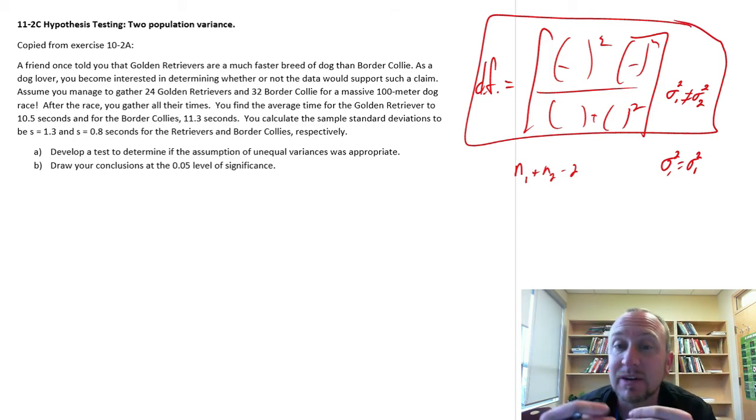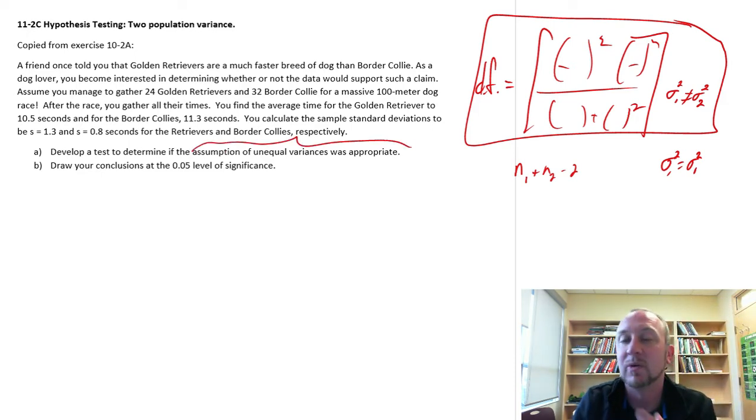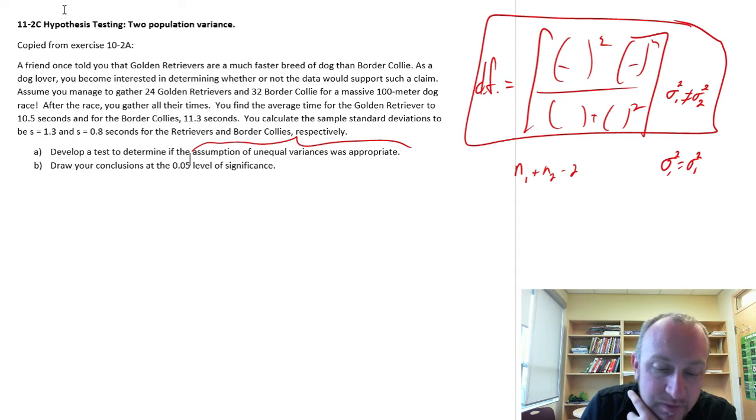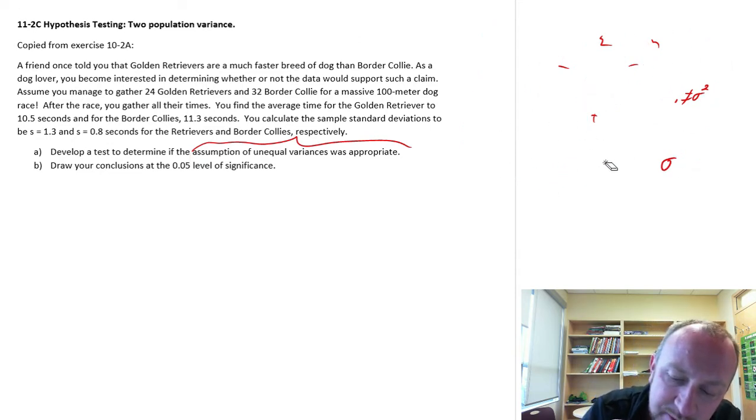In Module 10, when we did this exercise, we assumed that the variances were not equal. And so we had to calculate degrees of freedom using this big calculation. Now that we've gone through and we know how to test for equality on the variances, now we can see, was that assumption necessary? So here we're going to develop a test to determine if the assumption of unequal variances was appropriate.